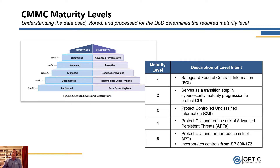Now that we have an understanding of the five levels within CMMC, how do we know what level is appropriate for an organization? Within the CMMC model, DoD has specified what level organizations need to be to meet their criteria, as shown in the table to the right. Level one is simply meant to help safeguard federal contract information, or FCI data. If you have FCI data within your environment, you will at least need to be level one maturity. Once you get to level three, these are organizations that have controlled unclassified information, or CUI, and are required to protect that CUI.